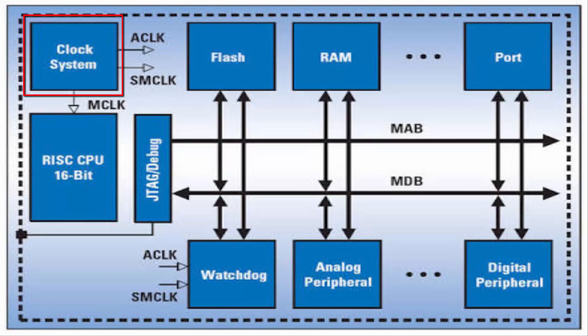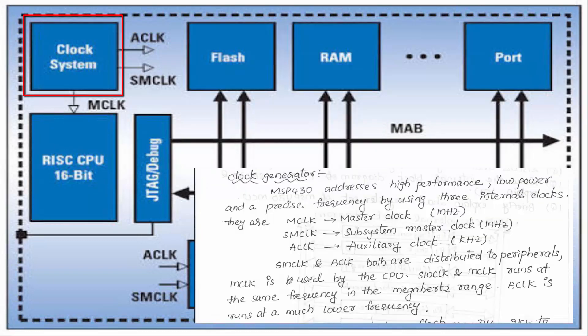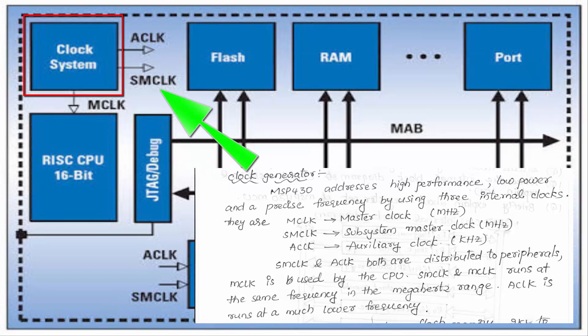The clock generator of the MSP430 addresses high performance, low power, and precise frequency by using three internal clocks. The first one is MCLK, the Master Clock, with frequency in the megahertz range. The second one is SMCLK, the Subsystem Master Clock, also with frequency in the megahertz range.